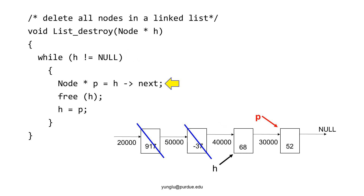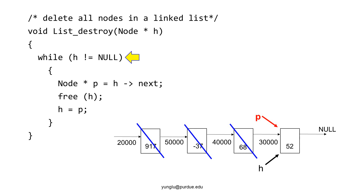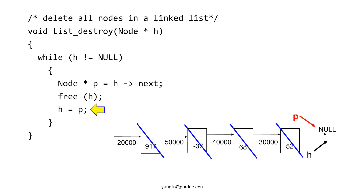h points to a valid node and it is not null. h points to the same node as p. The next step frees h, releasing the memory occupied by the node. The program goes back to the top and checks whether h is null or not. The program enters the while loop and sets p to be the next node after h. h now points to null, meaning it is not a valid node. The next step frees h and moves h to the next node. Both p and h now point to null, so the program exits the while loop and the memory of every node in the linked list has been freed.